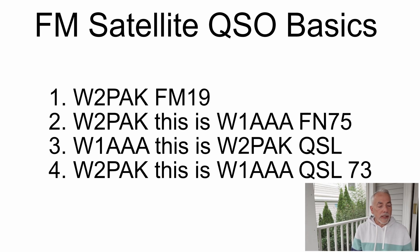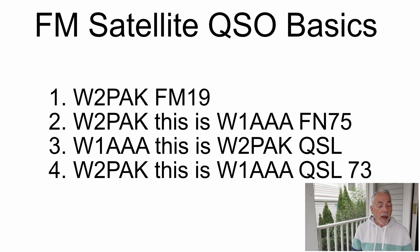Here's a good guideline for a satellite QSO format. You do not call CQ. You do not give a signal report. So let's say I'm calling over a satellite — I would say: Whiskey 2, Papa Alpha Kilo, Fox Mike 1-9. Fox Mike 1-9 is my grid square. The answering station — let's say W1AAA heard my call — would say: W2PAK, this is Whiskey 1, Alpha Alpha Alpha, Foxtrot Nancy 7-5.